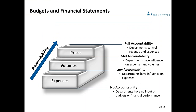Focusing on performance measurements for departments — really focusing on budgets and financial statements. I look at this in steps: no accountability, low accountability, mid accountability, and full accountability. Many organizations have no accountability where financial statements are all controlled by the CFO or senior executive with no broad departmental acceptance. Moving up the steps, many organizations focus on expenses — department leaders are asked to focus on expense management without any influence or control over volume or prices, merely held to FTE counts. We consider that low accountability.